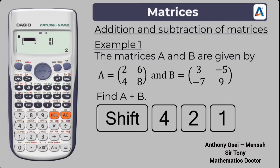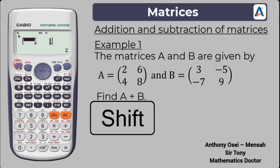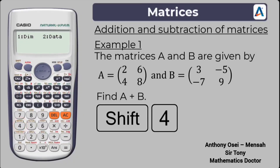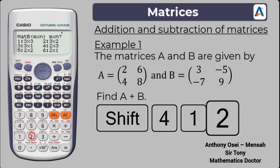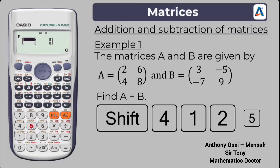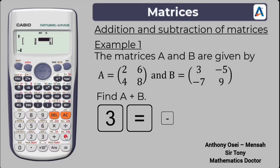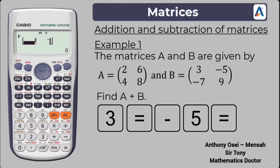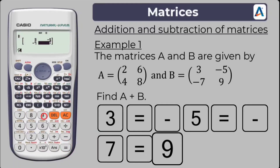Now input matrix B. Press shift, then number four — the matrix key — and choose number one for DIM. Select number two to choose matrix B. Matrix B is also a 2 by 2 square matrix, so press option number five. Input the values: press 3, equals, then negative 5, equals, then negative 7, equals, then 9, equals.